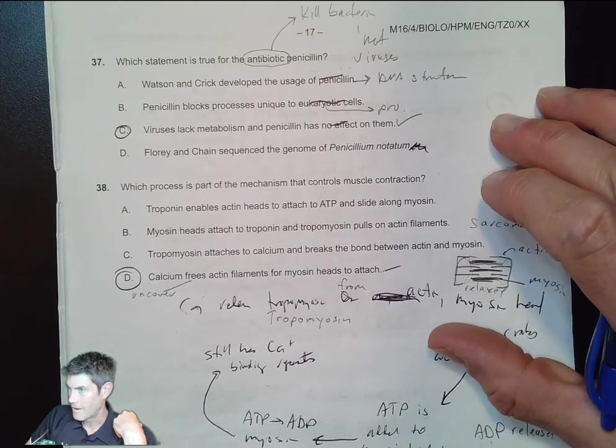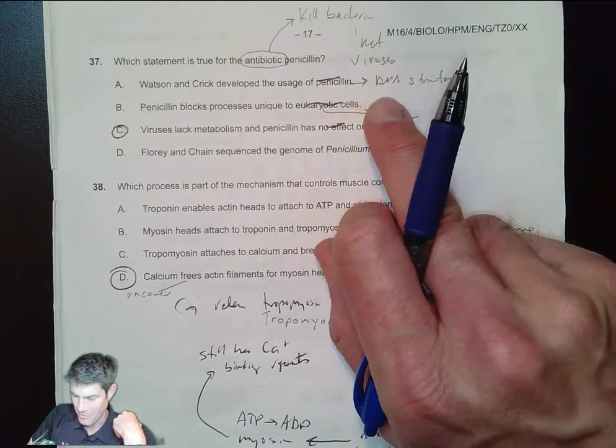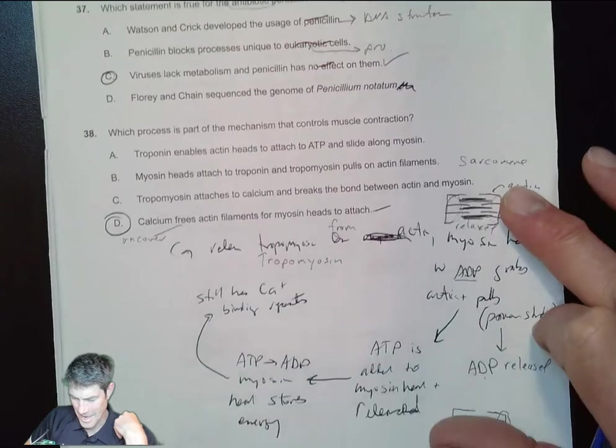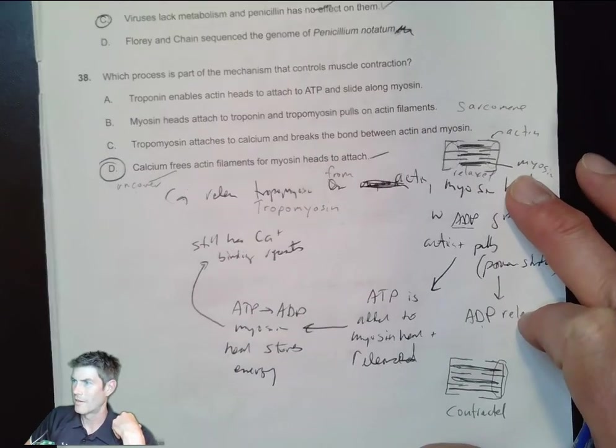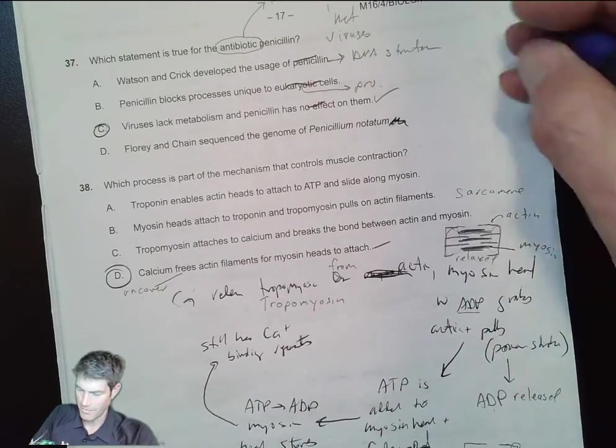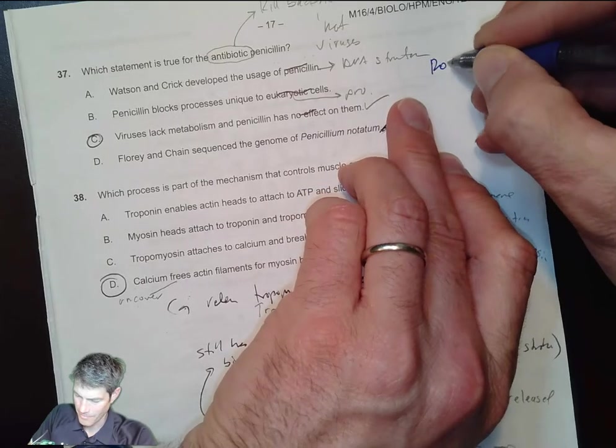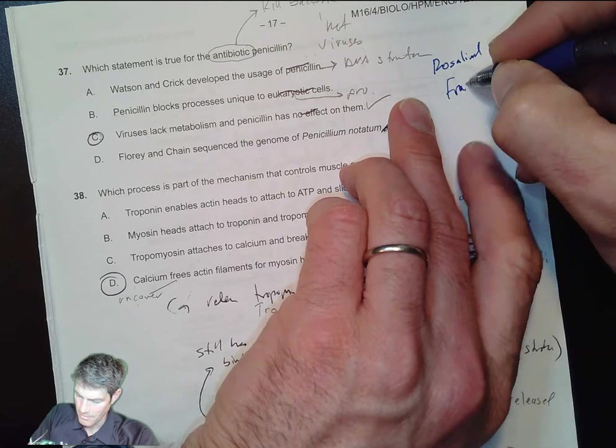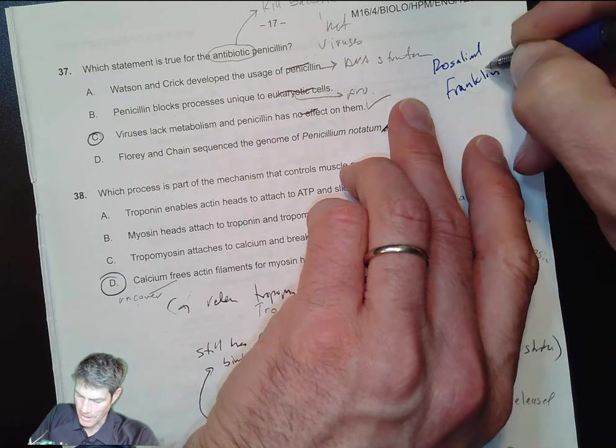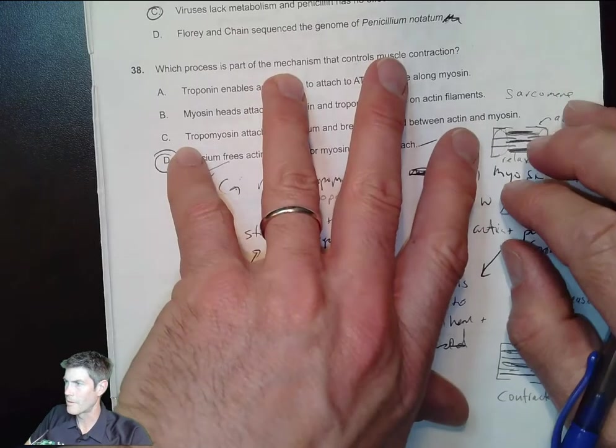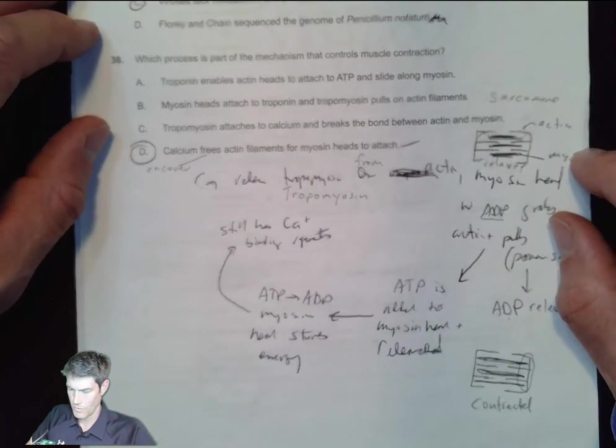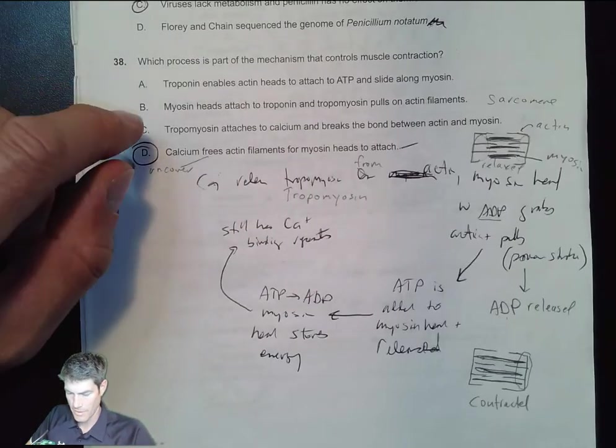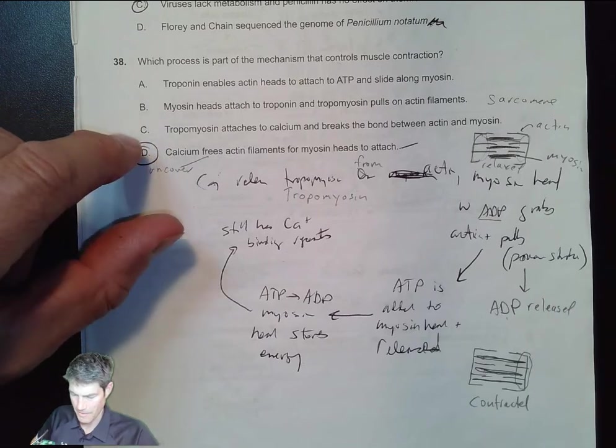Watson and Crick - remember they were the DNA structure people, along with Rosalind Franklin. Rosalind Franklin's X-ray image helped them solve, was critical to help them solve the puzzle of what DNA looks like.